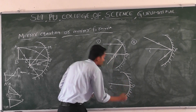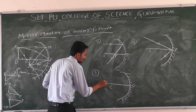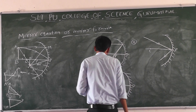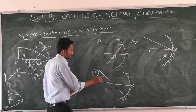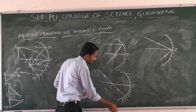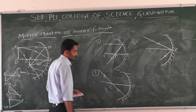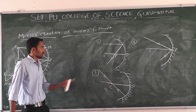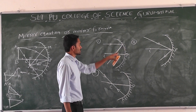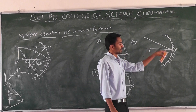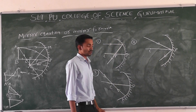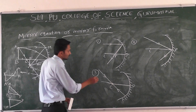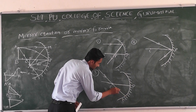Third case: if the light ray is directly incident from the center of curvature, it will simply retrace its path — meaning it reflects back in the same direction from which it was incident.